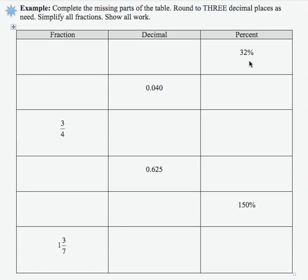In the first row, I have 32%. I'm going to start by changing that to a fraction. Remove the percent sign - 32% is 32 over 100. Place the number over 100, then reduce. 32 is 4 times 8, 100 is 4 times 25. The common factor of 4 is removed, and my resulting fraction is 8 over 25.